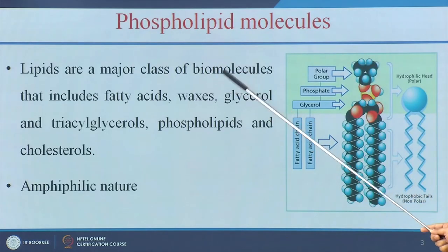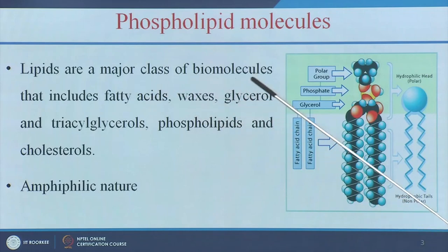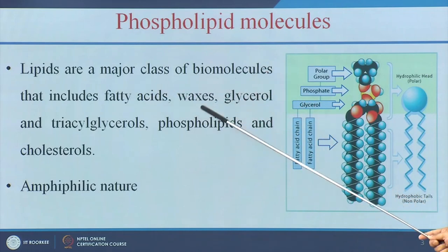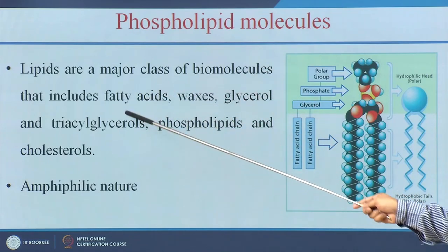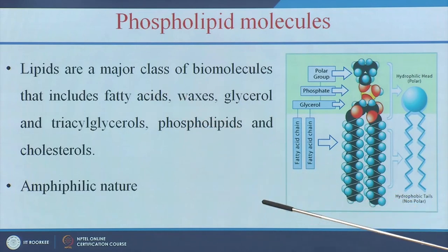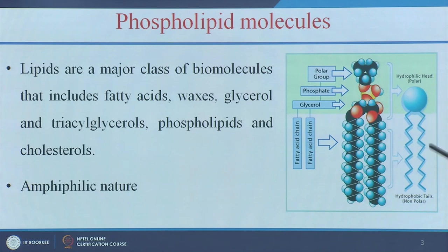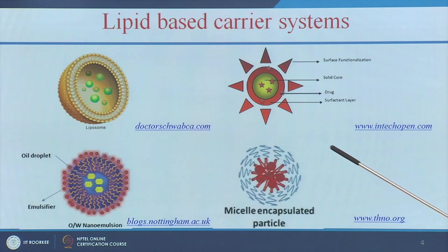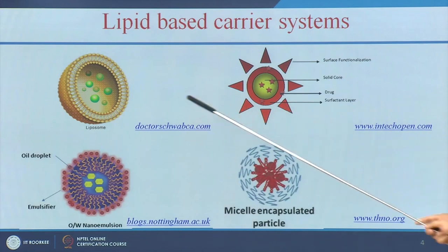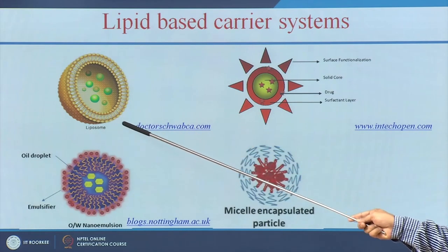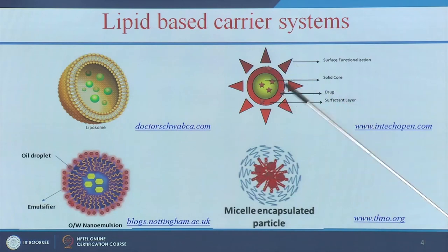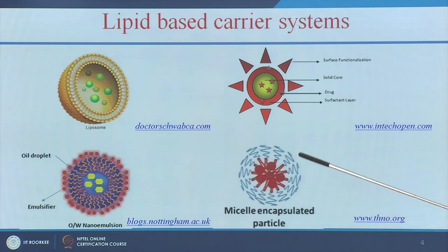First we will see what is phospholipids. The lipids are the major class of biomolecules that includes phospholipids, cholesterols, and fatty acids. Lipids are amphiphilic in nature, meaning they have a hydrophilic polar head and a hydrophobic non-polar tail. These are the various lipid-based carrier systems: liposome, solid lipid nanoparticles, nanoemulsion, and micelle.